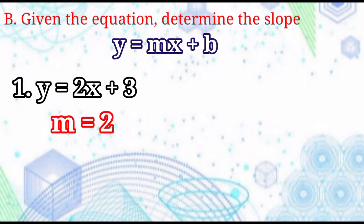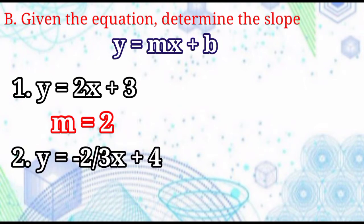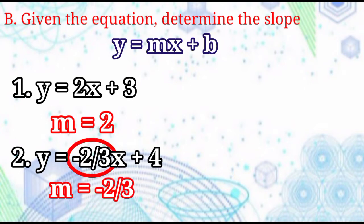Therefore, the slope is equal to positive 2. Example number 2: Y equals negative 2 thirds X plus 4. This equation is already in slope-intercept form. Therefore, the value of M, or the slope, is equal to negative 2 thirds.